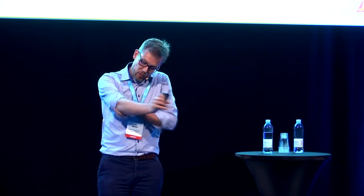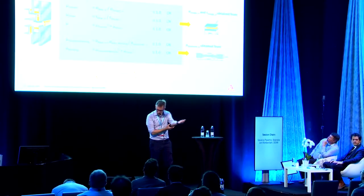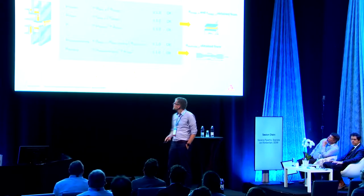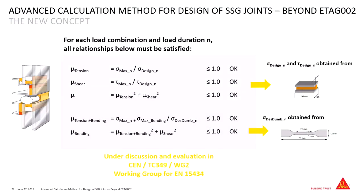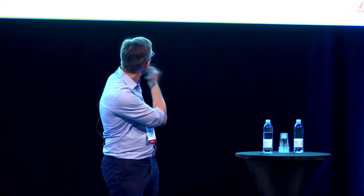So again here — for the first three lines you have already seen before — the additional information is that for validation of material performance you can still use the standard specimens known since a long time. But for bending effects, maybe we have to switch over to other sample geometries which are reflecting the material behavior in a better way. As mentioned at the beginning, this is now under discussion in a standardization committee on the European level, and input from your side might be welcome in order to have additional industry input into this topic.